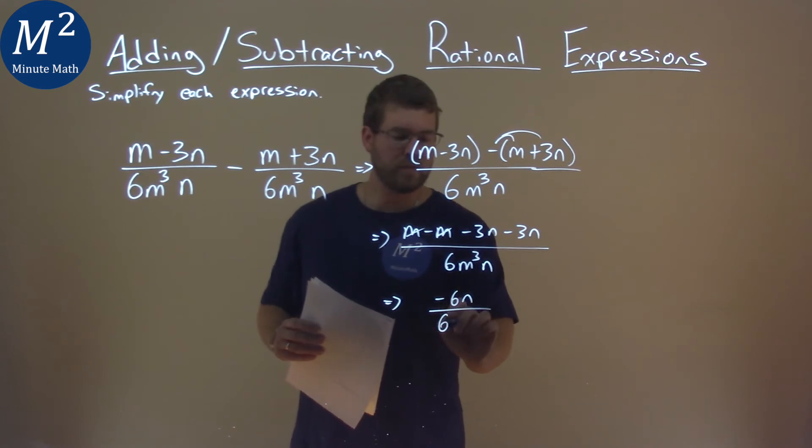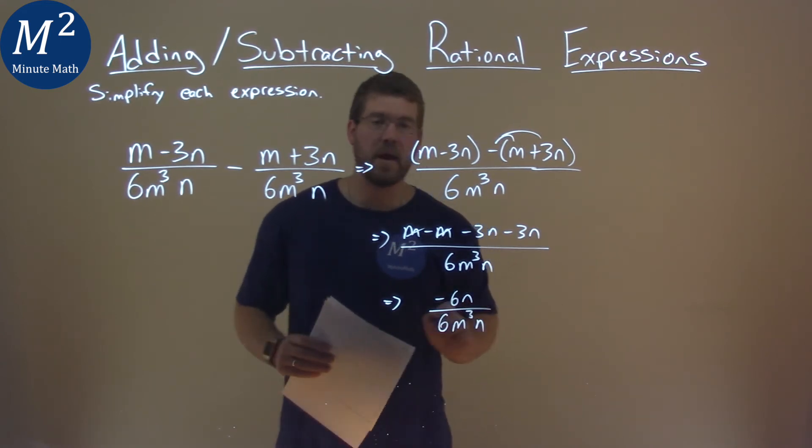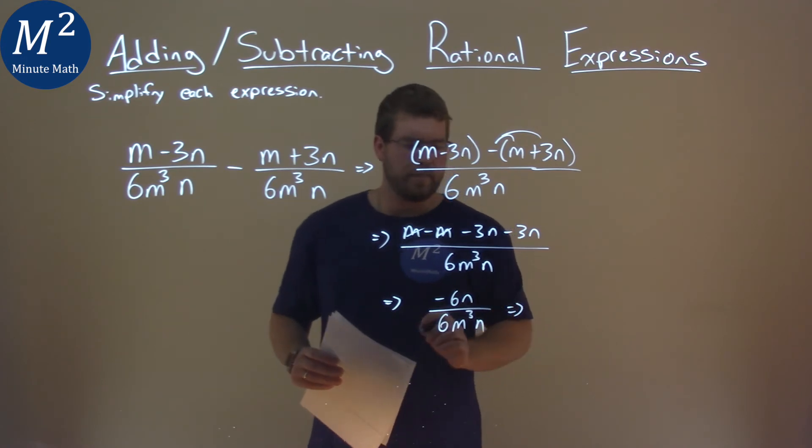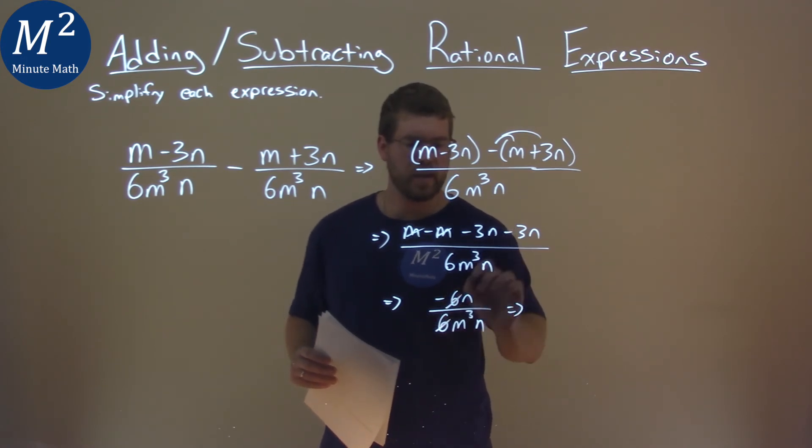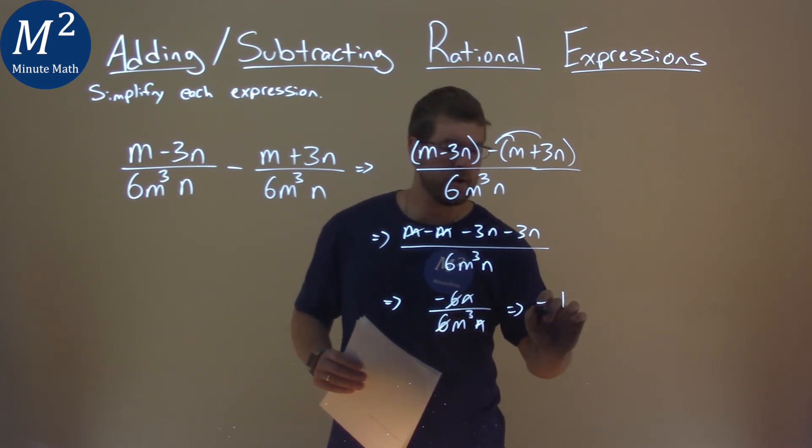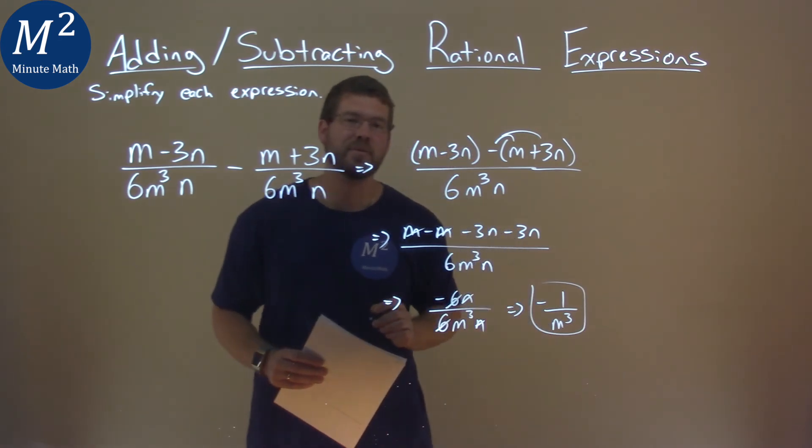In the denominator, we have a 6m to the third power n. But we're not done. What can we cancel out? Well, the 6s cancel, and the ns will cancel. And so we're left with a negative 1 over an m to the third power, and that is our final answer.